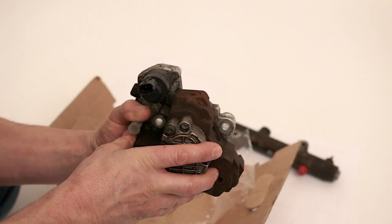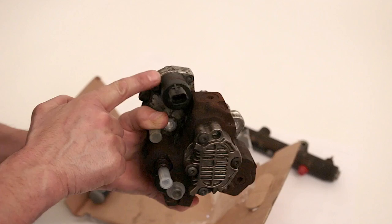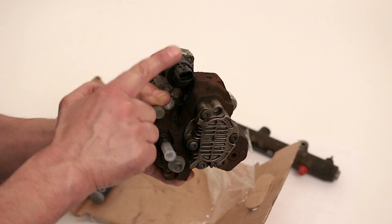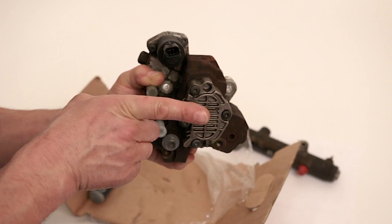On this pump, you have this valve here. Electrical connection. Two-pin connection. This is your fuel metering valve. This is what meters the fuel from this pump to your fuel rail. How much fuel is going to go to your fuel rail. How much pressure.